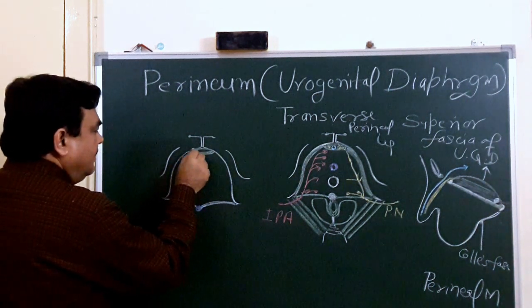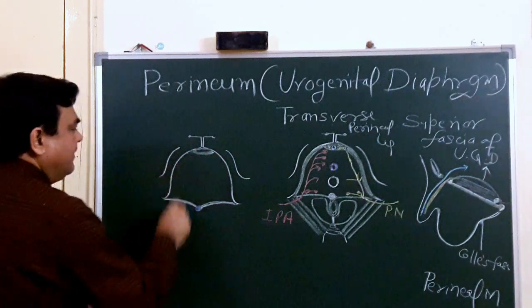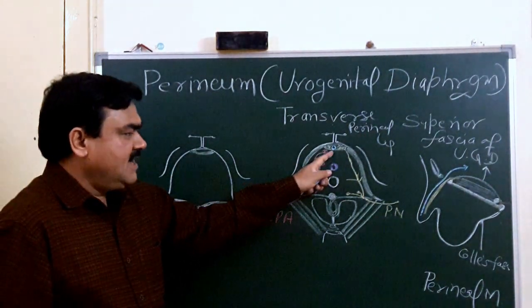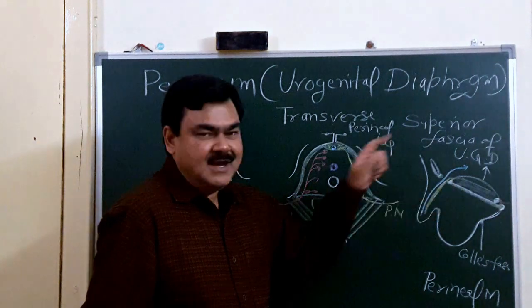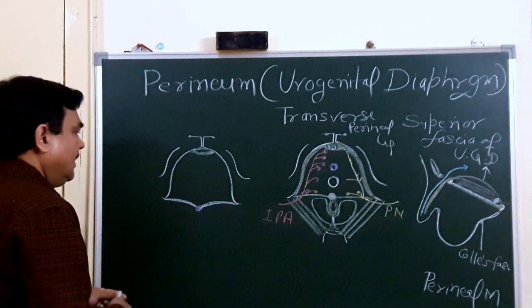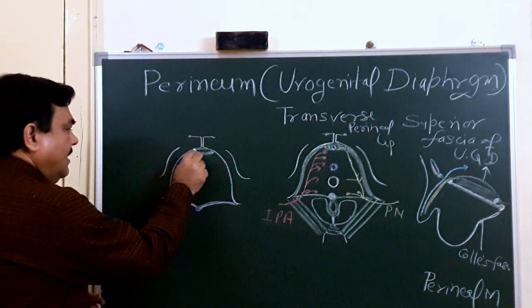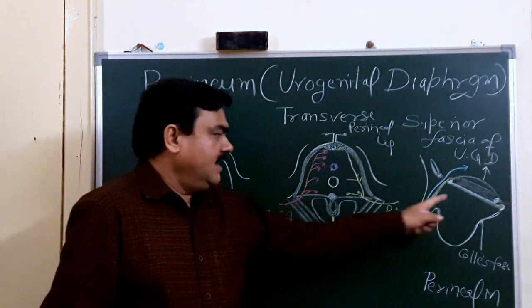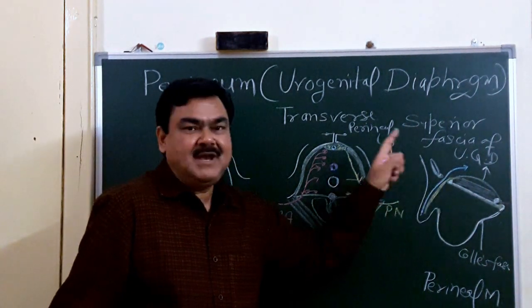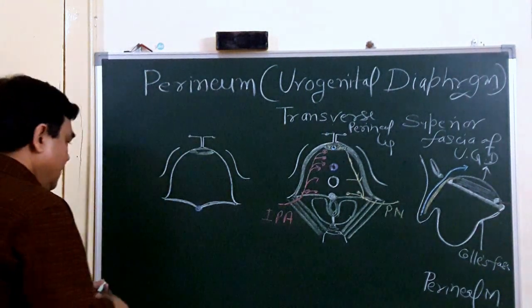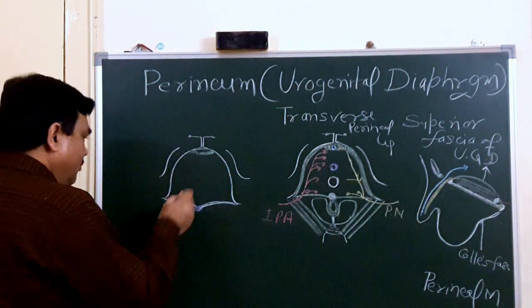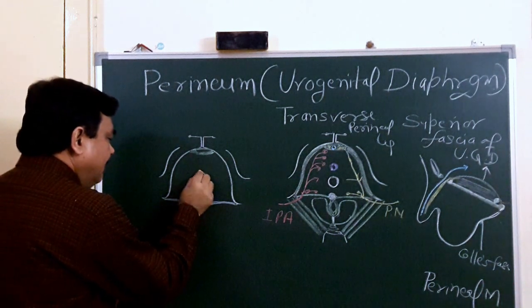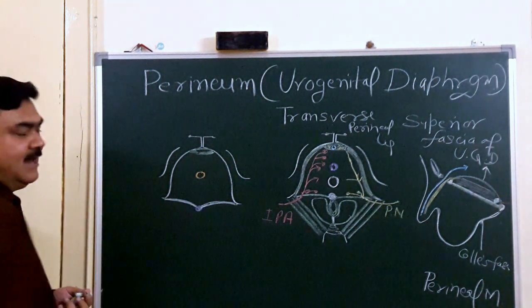Here is the arcuate pubic ligament, and here is another ligament — the transverse perineal ligament — which is formed by thickening at the apex of the perineal membrane. Here is the opening of the urethra in the case of male.